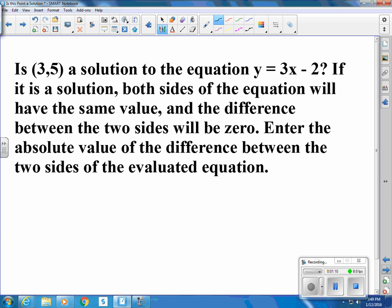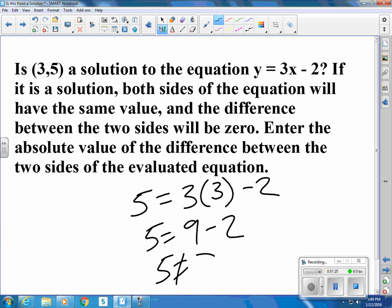For point (3,5) and y = 3x - 2, the y is 5, the x is 3, so is 5 equal to 9 minus 2? Nope, because 5 is not equal to 7.